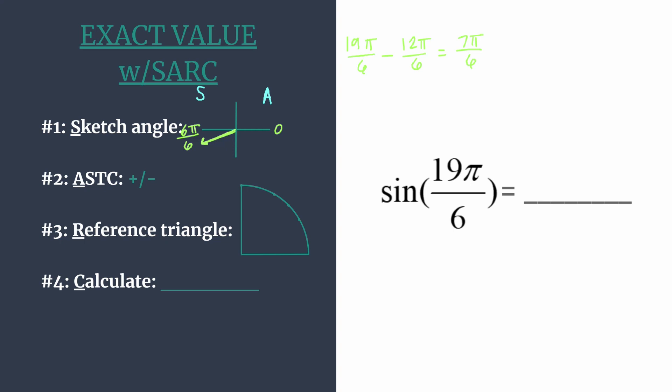sine and its reciprocal cosecant are the only ones positive in 2, tangent and its reciprocal cotangent are the only ones positive in 3, and cosine and secant are positive in quadrant 4.